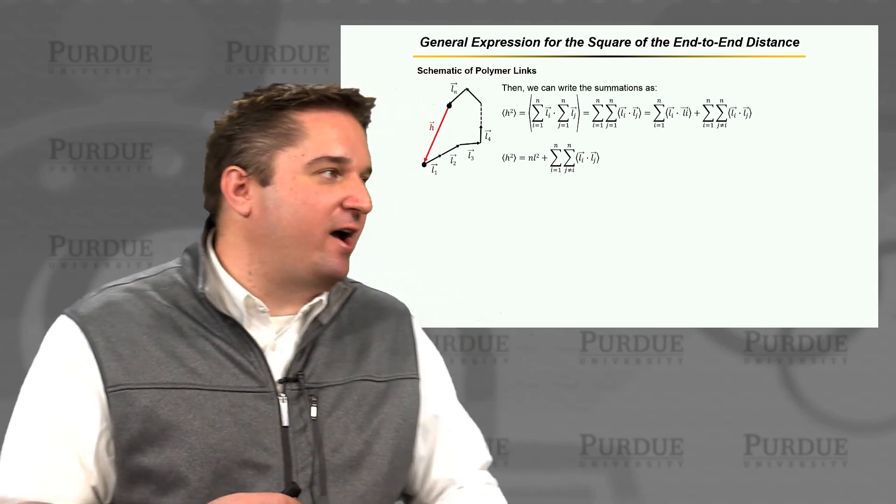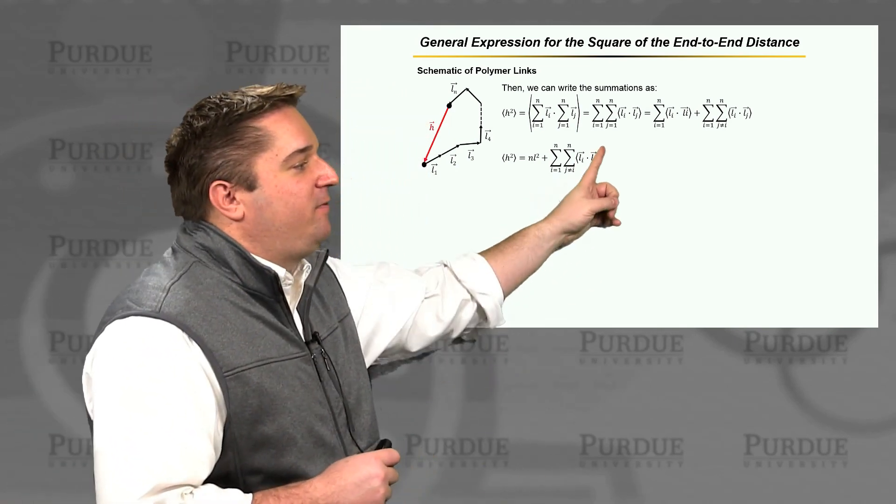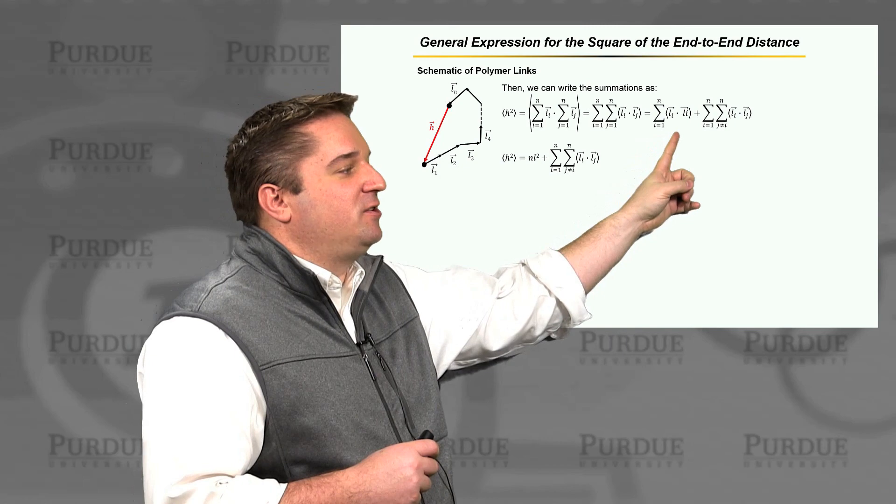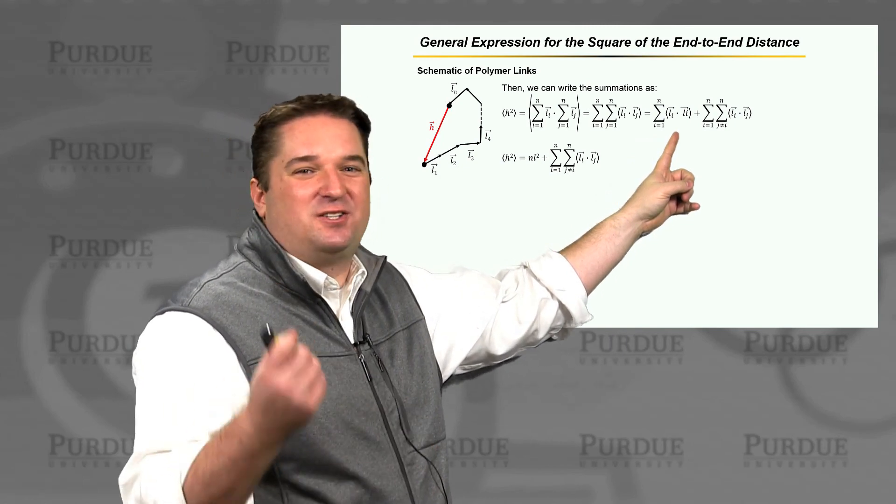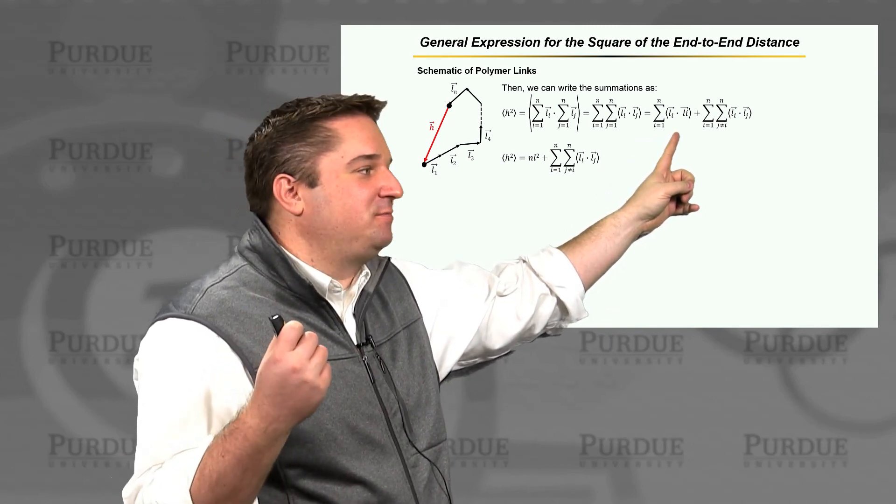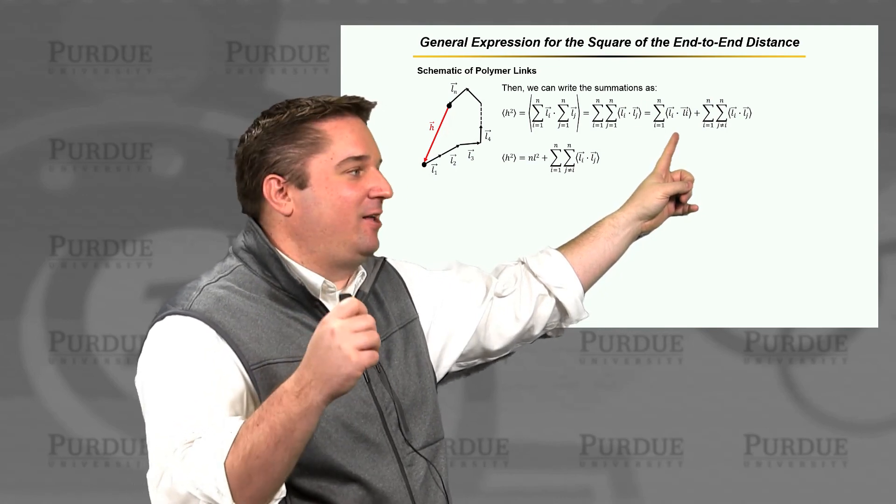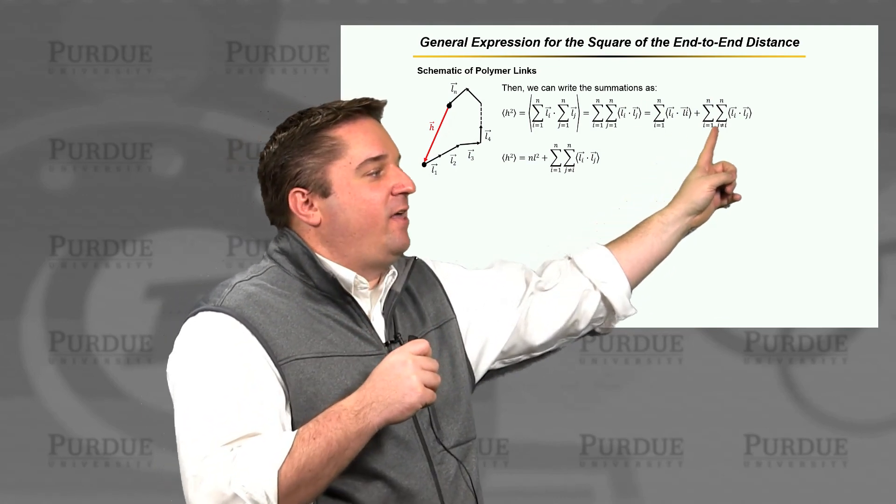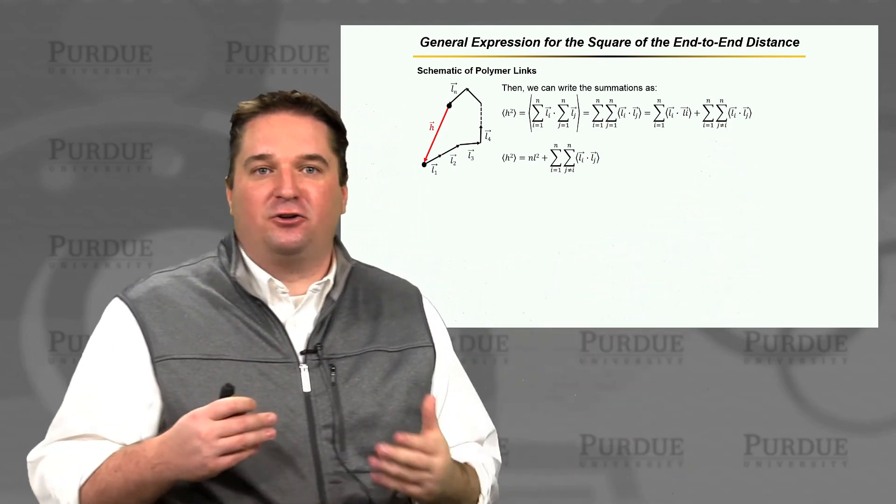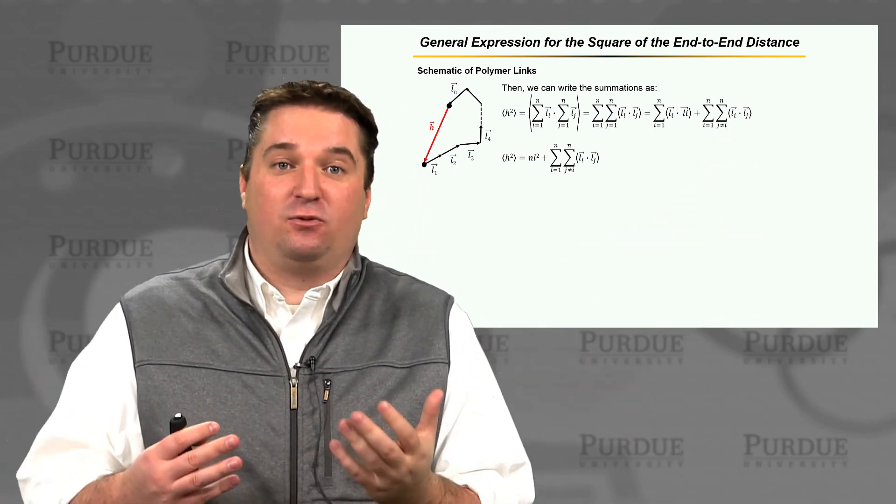If we do that, we can rewrite this in a different way. If this is true, then we can say all of the links that are the same, all the same Li's. And we can take that summation, so that's Li dot Li. We can take that out.